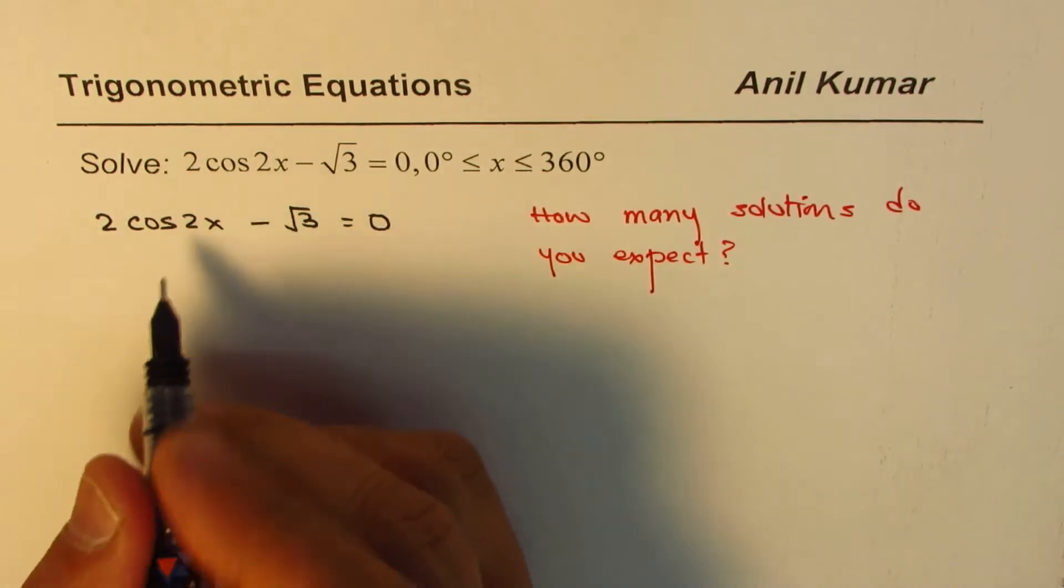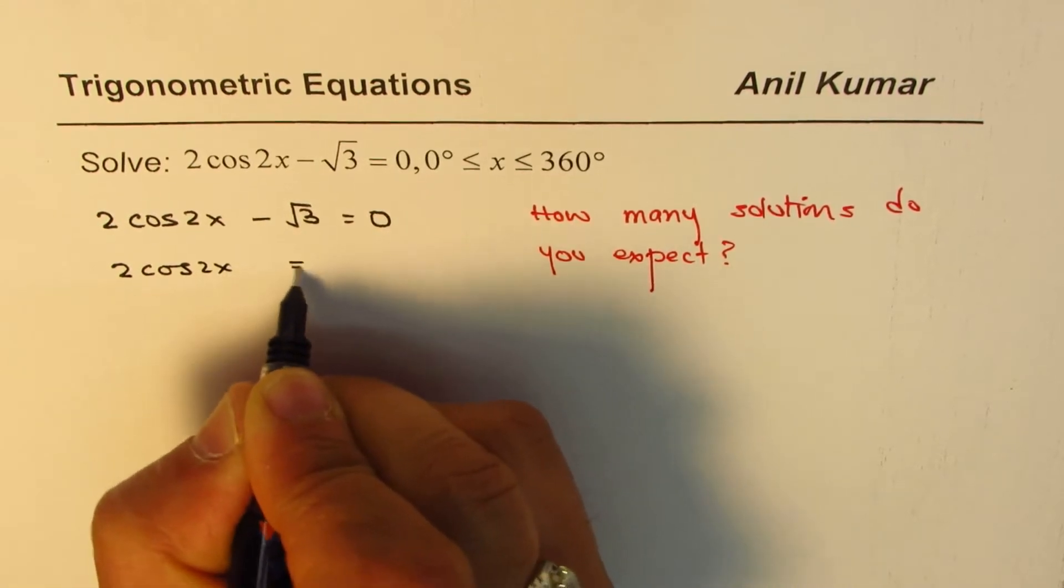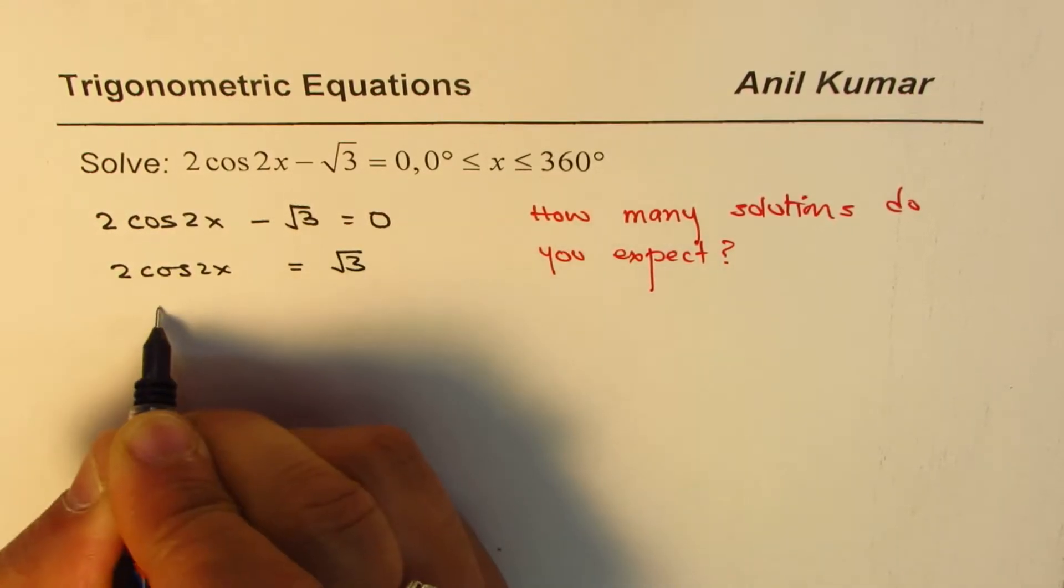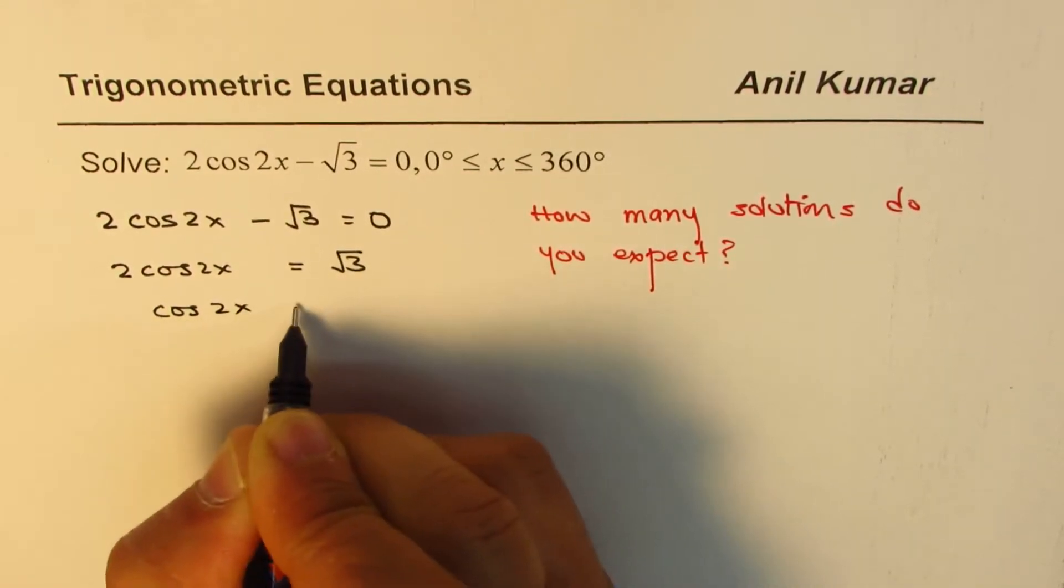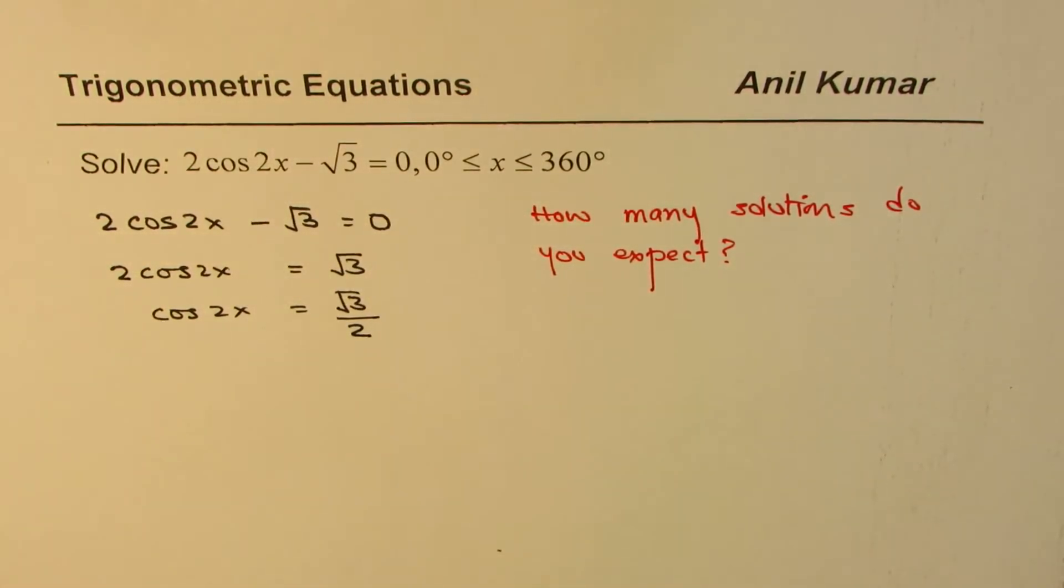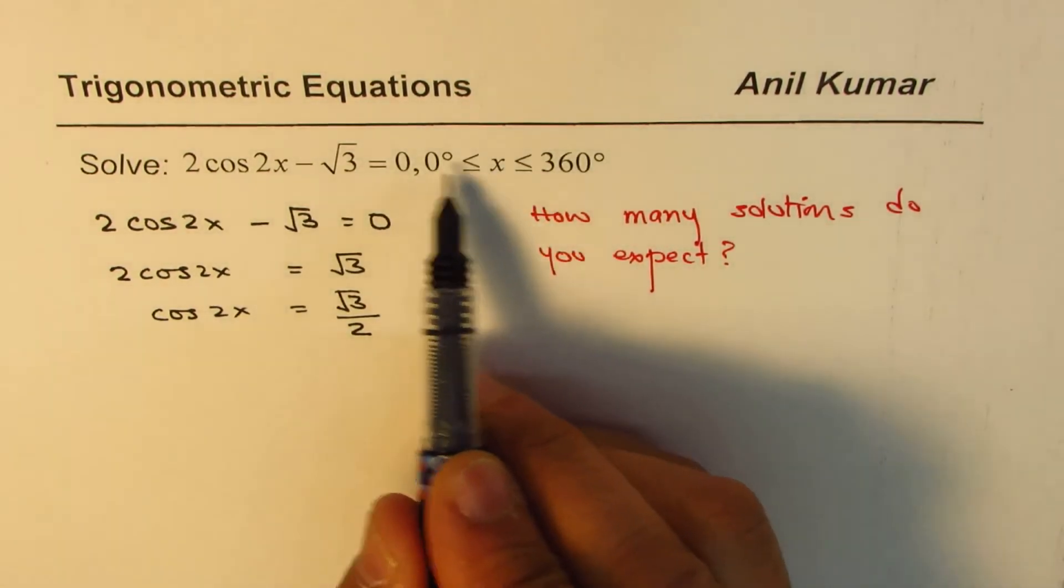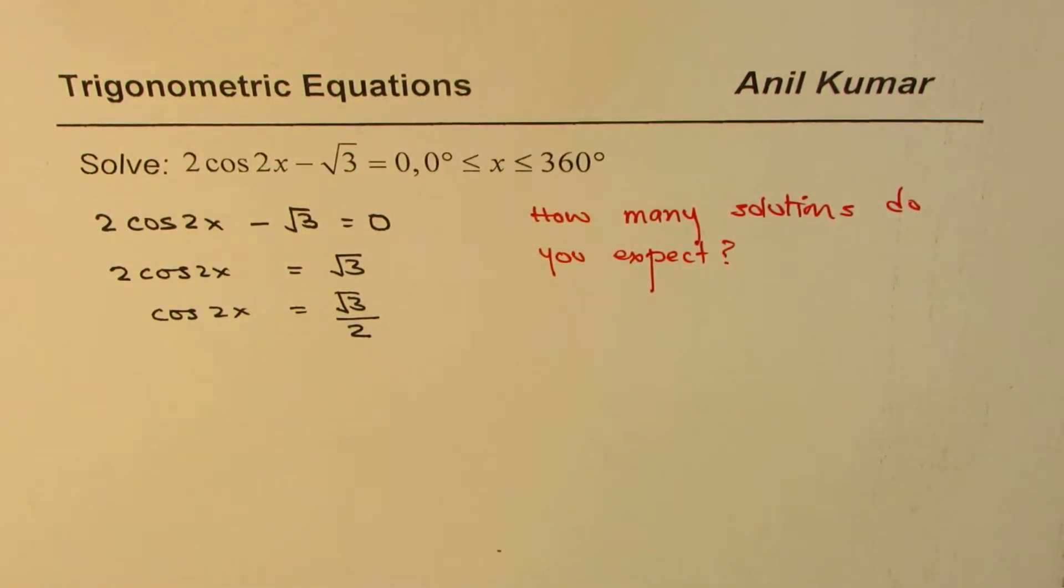We could actually go further. Solve this as 2 cos 2x equals to square root 3, and then we can say cos 2x equals to square root 3 divided by 2. So cos 2x equals square root 3 divided by 2, x is between 0 to 360 degrees. The question is how many solutions do you expect?